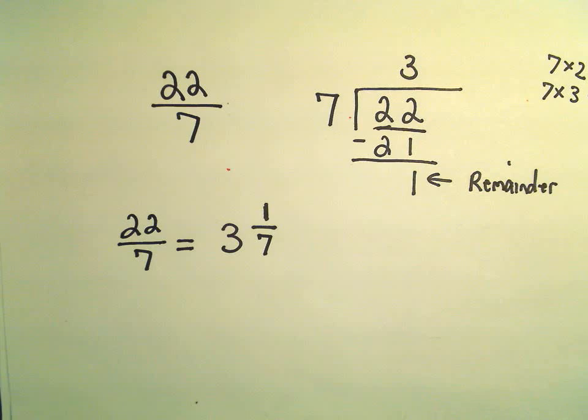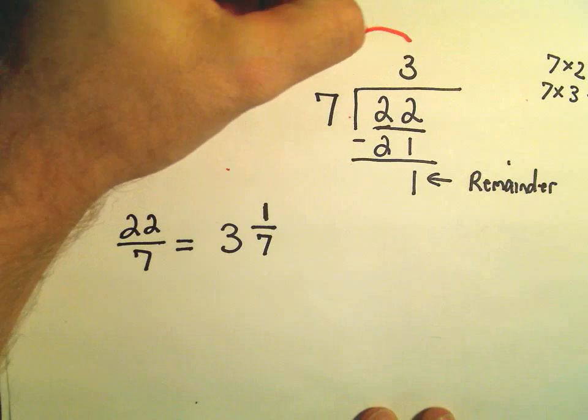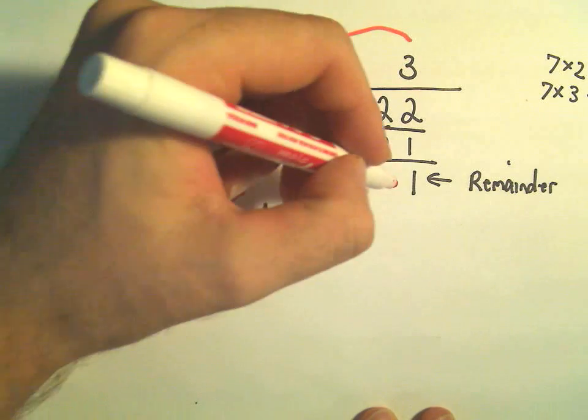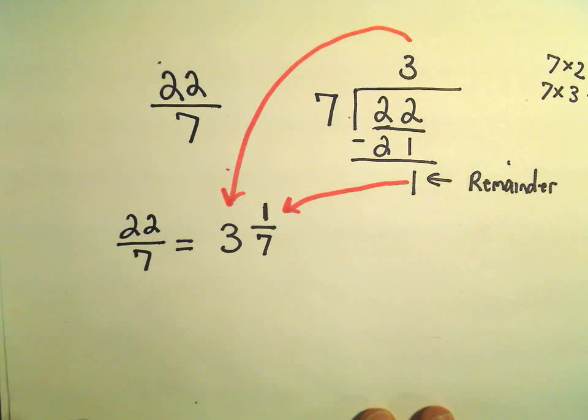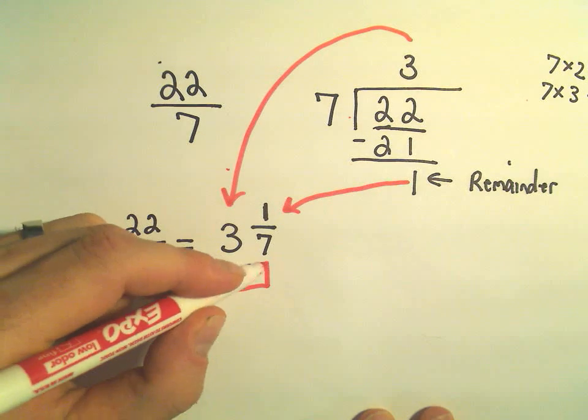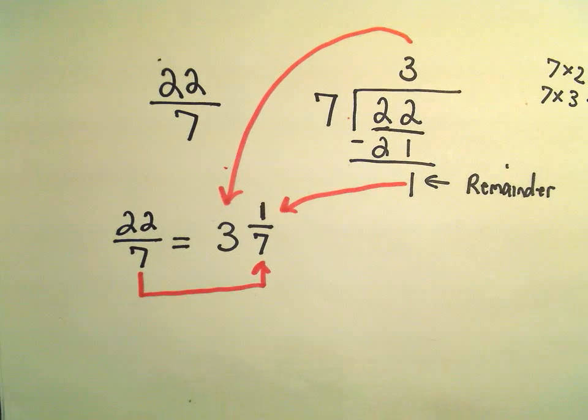And that's all there is to it to write a mixed number as a fraction. So the number on top goes out front, the remainder becomes the numerator of our new fraction, and then whatever the original denominator was, that's what goes underneath.